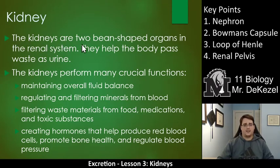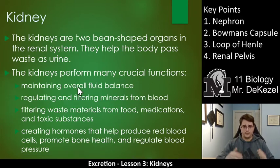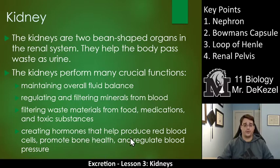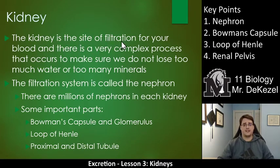The kidneys are two bean-shaped organs in the renal system. They help the body pass waste as urine. The kidney performs many crucial functions: it maintains overall fluid balance, saving water or getting rid of it; it regulates and filters minerals from the blood; it filters waste material like waste from food, medications, and toxic substances. It also creates hormones that help produce red blood cells, promote bone growth, and regulate blood pressure. The filtration system is called the nephron.